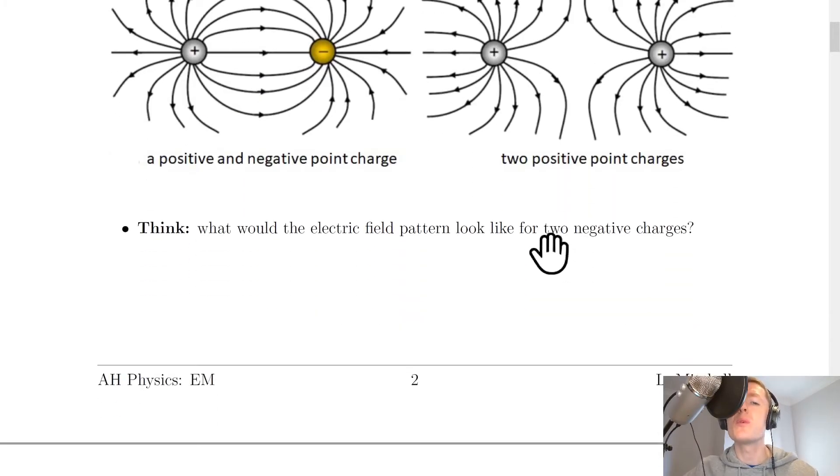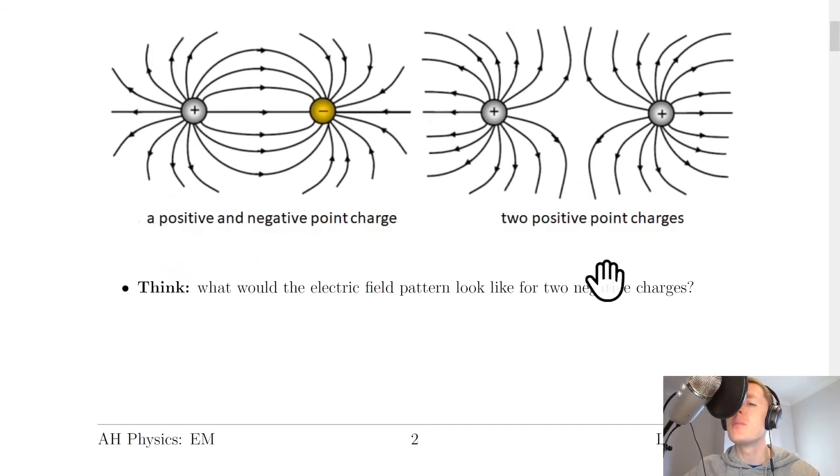Lastly it says to think what would the electric field pattern look like for two negative charges? Well you should be thinking here that if it's two negative point charges it'll look very similar to the case for two positive point charges. However what we would have instead is the field lines going in towards the charges, but we would still have this shape in the middle where there are no field lines.